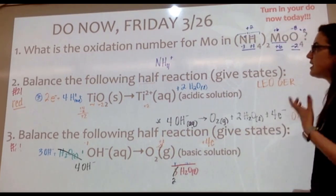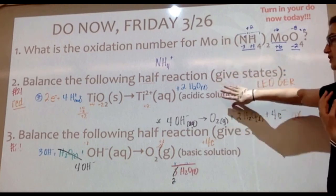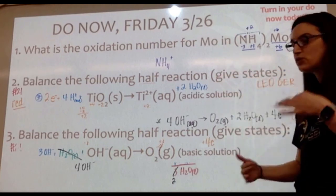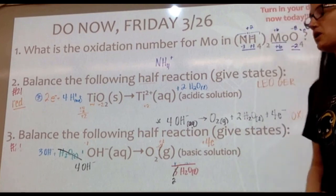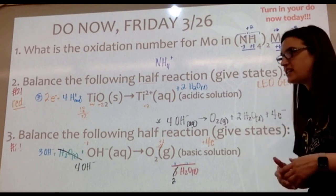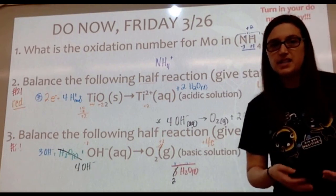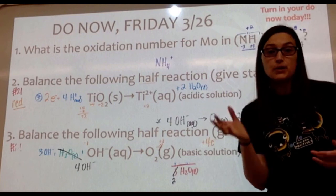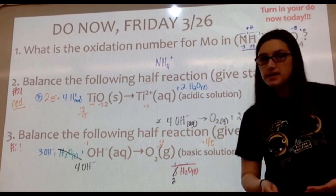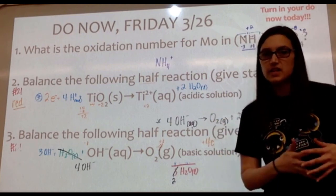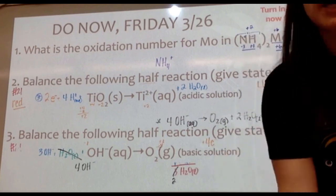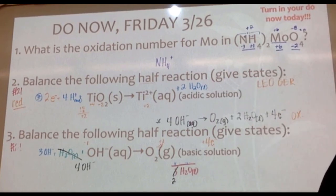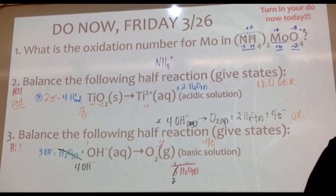Working through oxidation numbers in number one and balancing half reactions in two and three should help with question 21 on Mastering. Remember: if the problem says to identify phases or states of matter, include them in your equations. If it doesn't specify, you don't need them. Are there any questions on one, two, or three?